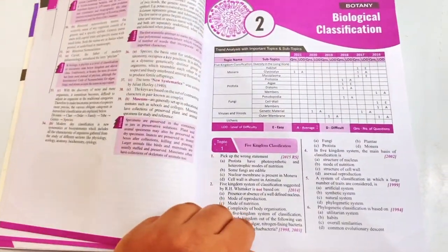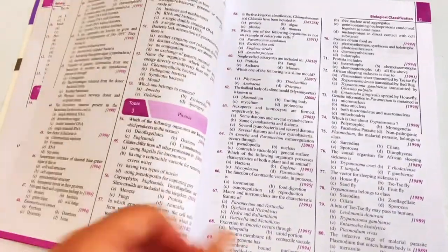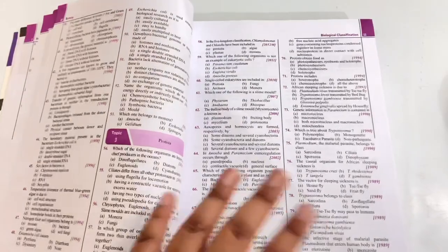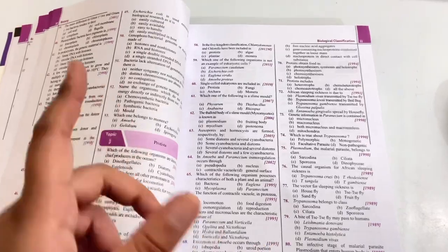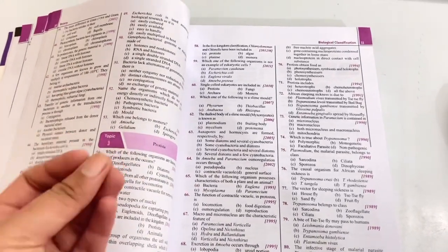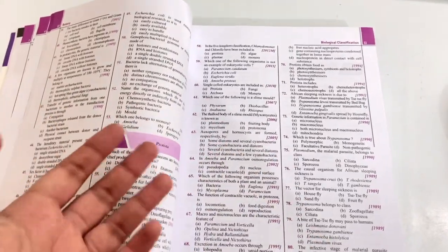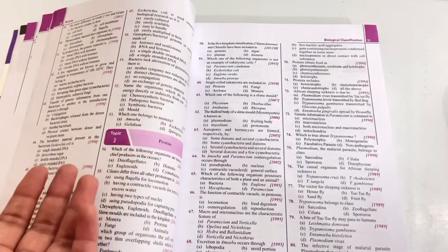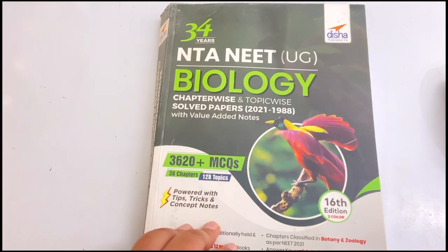In this way all the chapters of class 11th and 12th are given in this book. This edition is a fully revised and updated edition with zero errors. The one thing that I really like about this book is that the questions have been arranged chapter-wise or more precisely topic-wise so you guys can get the idea that from which topic or chapter how many questions have been asked and what type of questions. I will link this book in the description box below, definitely check this one out.